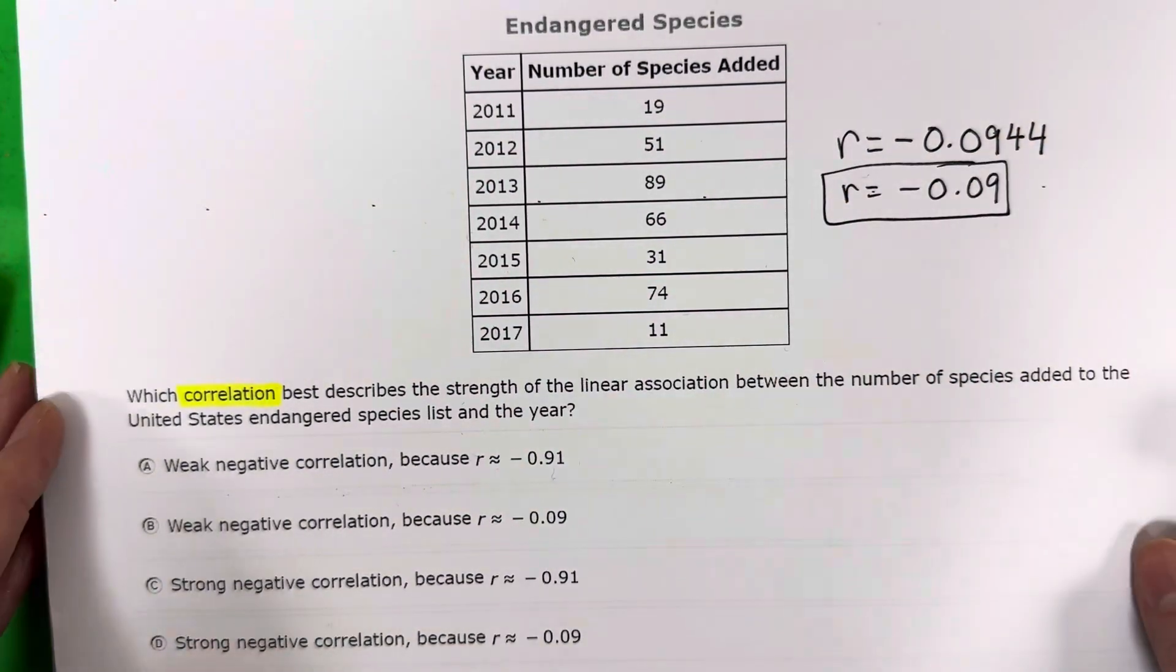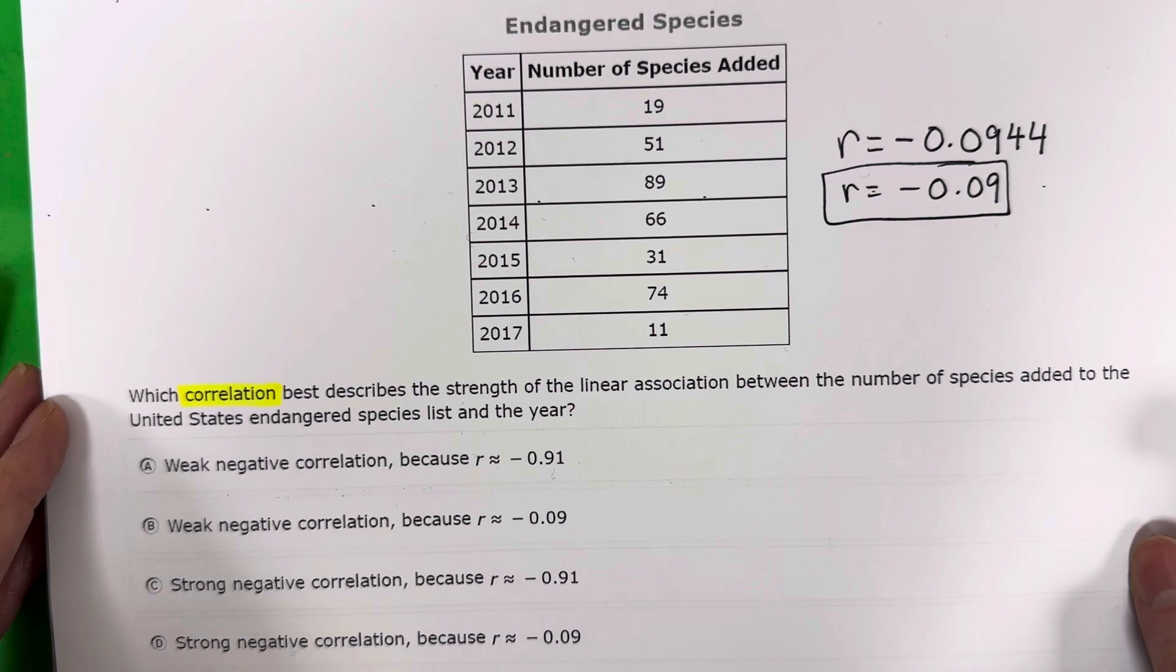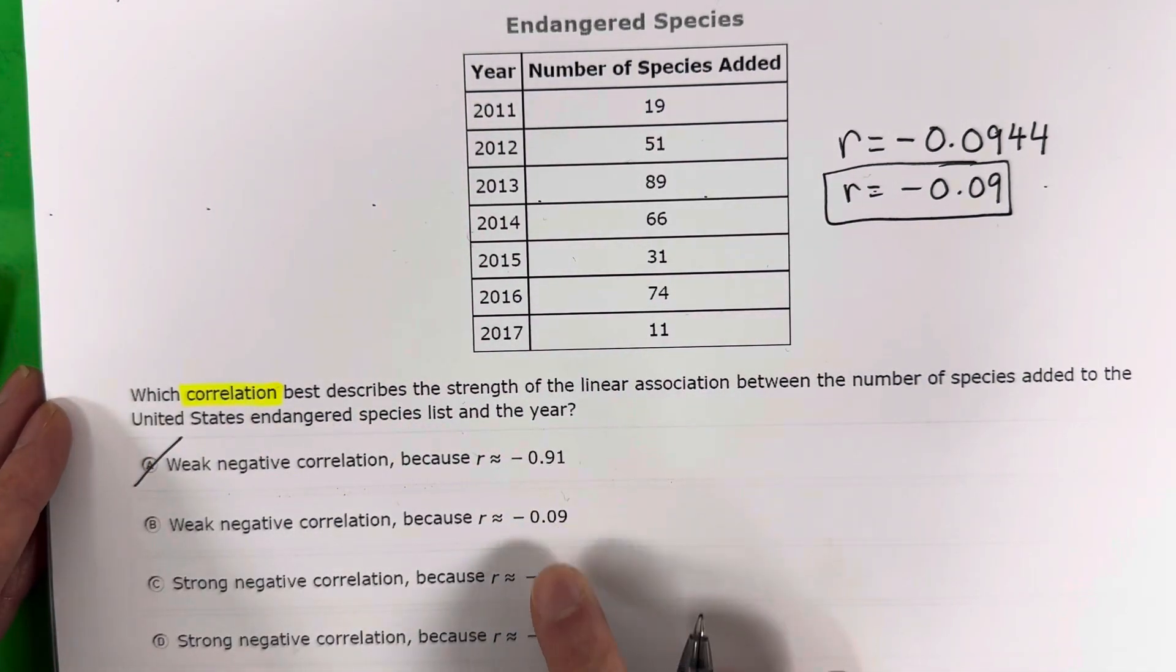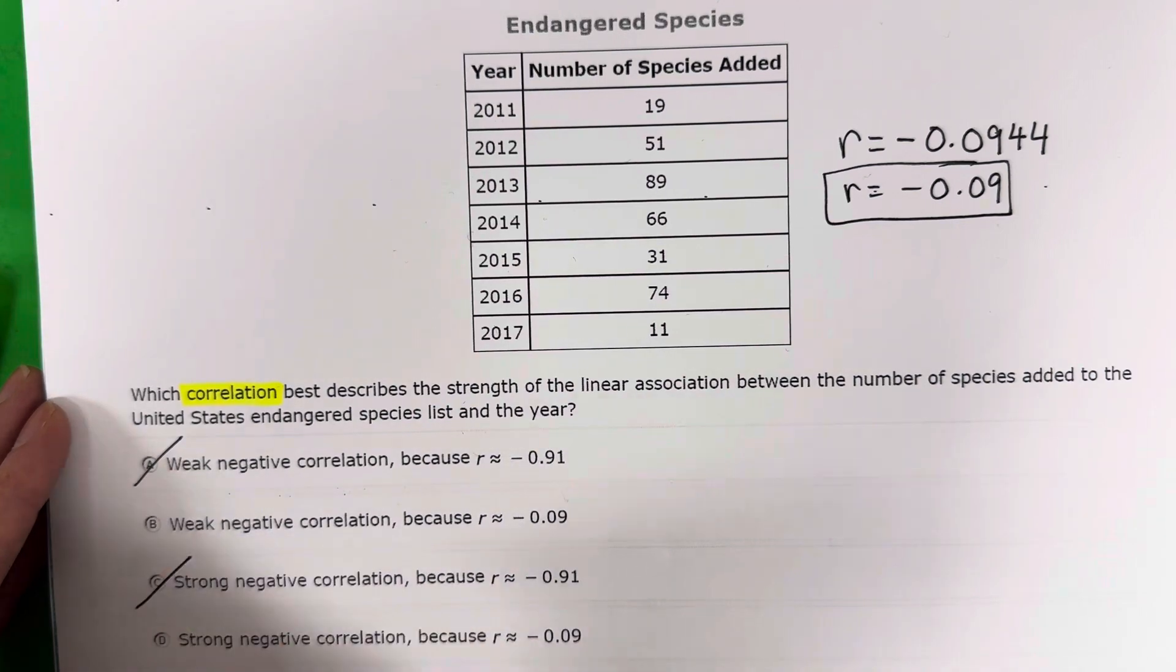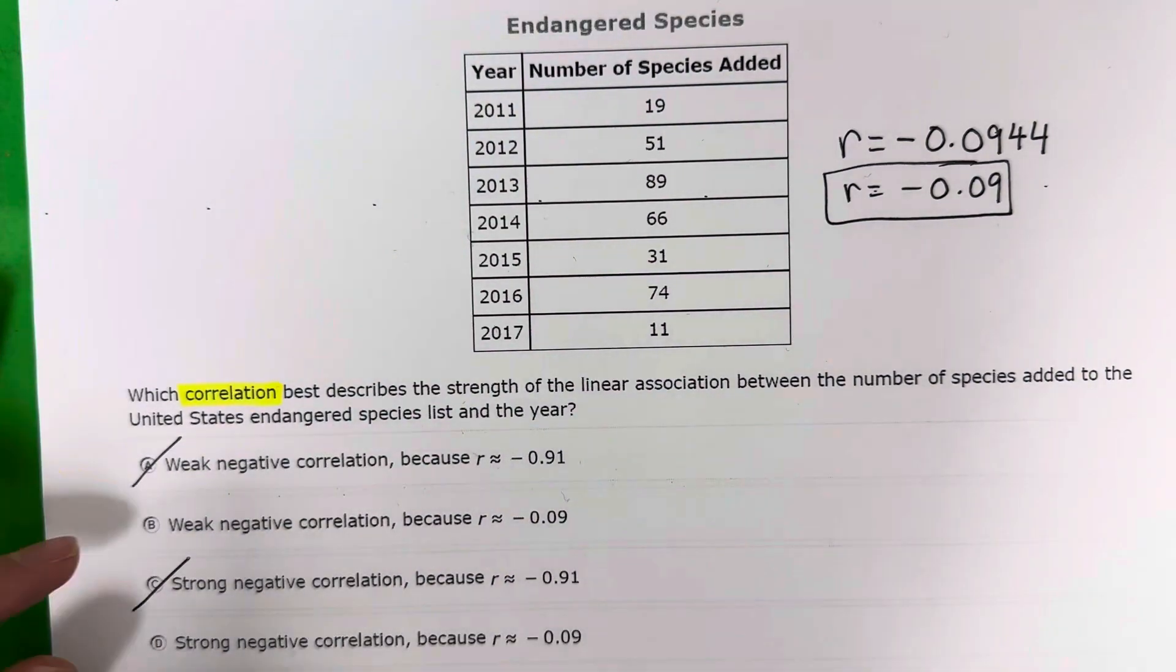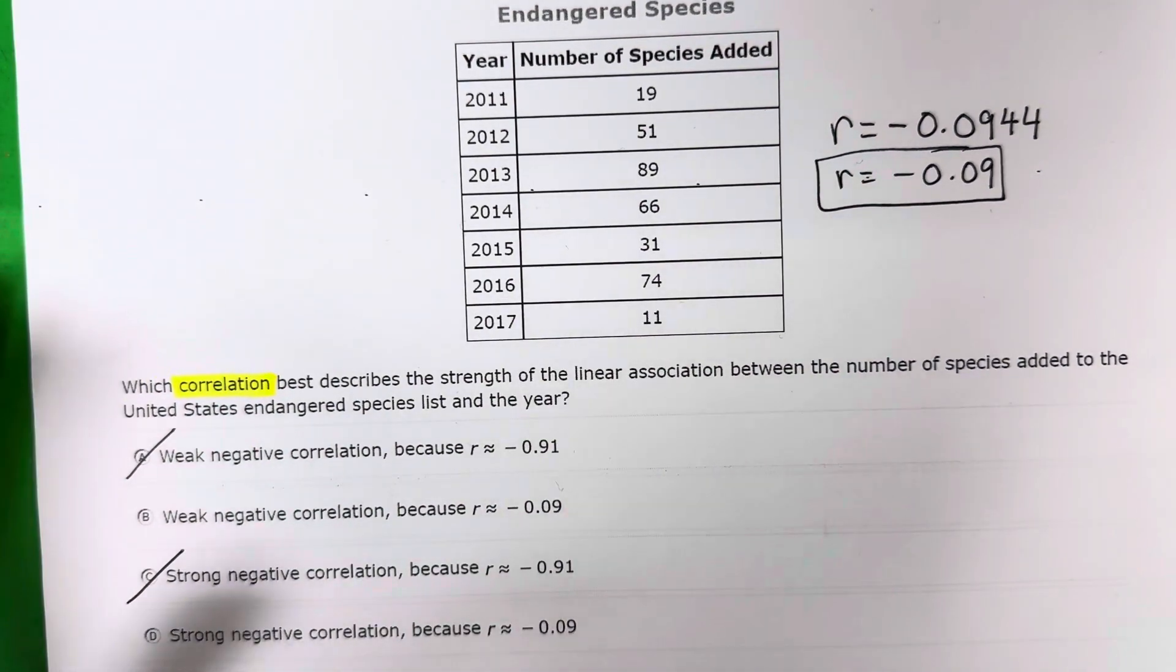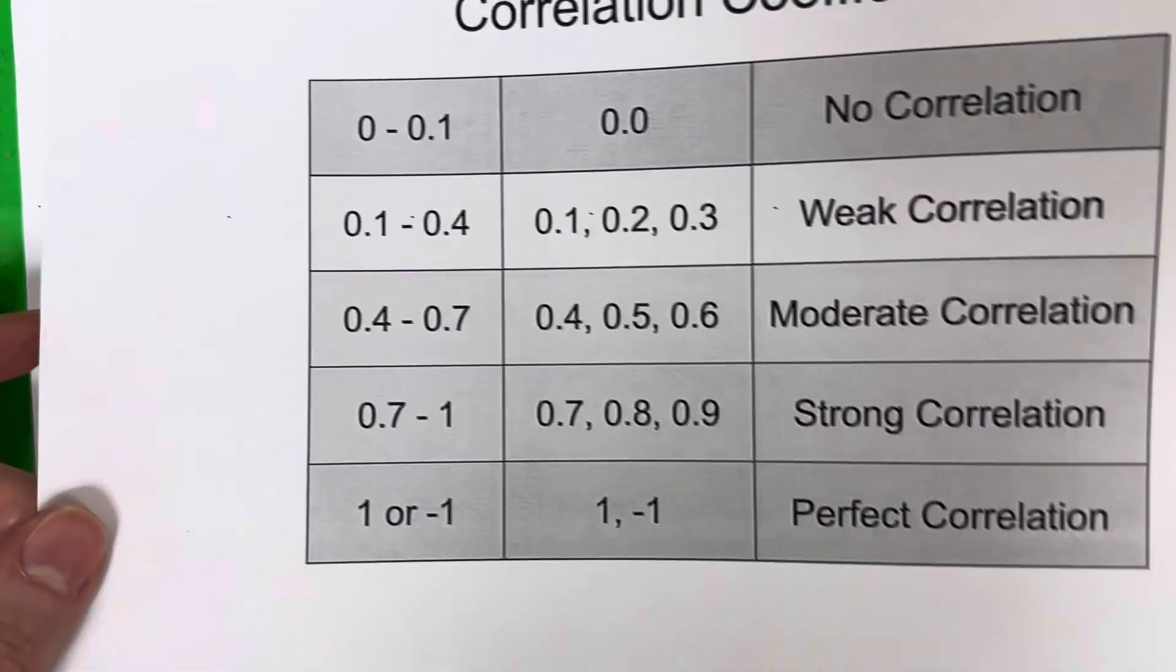Let's go ahead and take a look at which one could it possibly be. It's not this one, maybe this one, not that one, possibly this one. All right. And now we need to decide if it's a weak or a strong correlation. So I have a little table for you guys. I want to show you it.